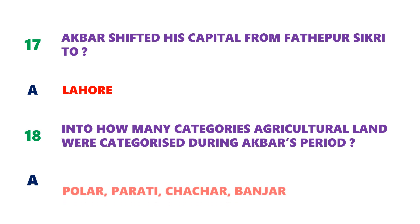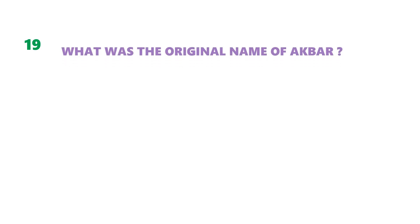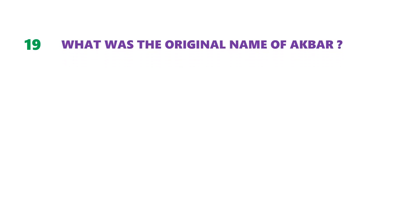The four categories of agricultural land during Akbar's period were Polaj, Parauti, Sahar, and Banjar. Question number 19: what was the original name of Akbar? Jalaluddin was the original name of Akbar.